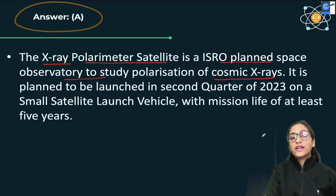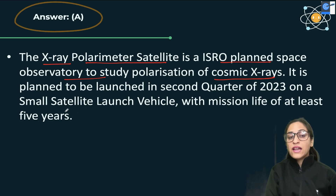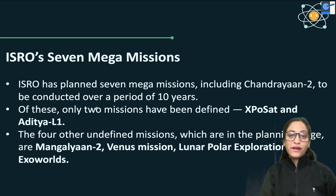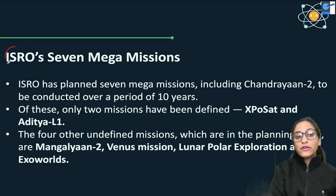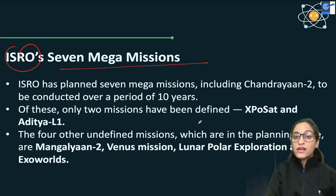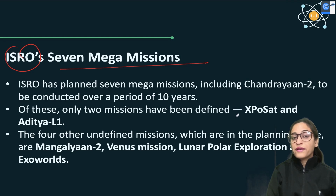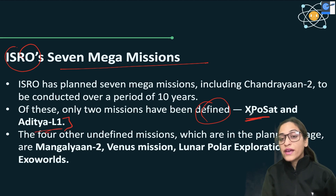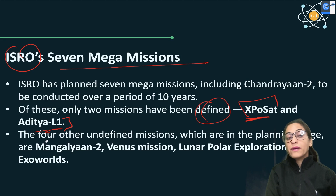XPoSat is ISRO's planned space observatory to study polarization of cosmic X-rays. It will be launched in the second quarter of 2023 on an SSLV (Small Satellite Launch Vehicle), and it is planned to work for 5 years. I will also tell you that ISRO's 7 mega missions are very important — including Chandrayaan-2 and missions already identified. XPoSat is one of them, and Aditya-L1 is also in the news.